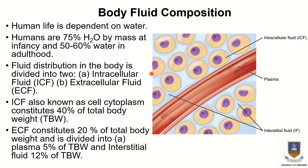Fluid distribution in the body is divided into two compartments. The fluid found inside cells is called intracellular fluid, or cell cytoplasm, and it constitutes 40 percent of total body weight. The fluid found outside cells is called extracellular fluid, which in adults constitutes 20 percent of total body weight.